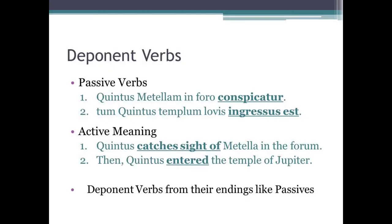Deponent verbs. So, deponent verbs look like passive verbs. For example, 'quintus metellam in foro conspicatur,' and secondly, 'tum quintus templum Iovis ingressus est.' However, when they're translated into English, they have an active meaning.